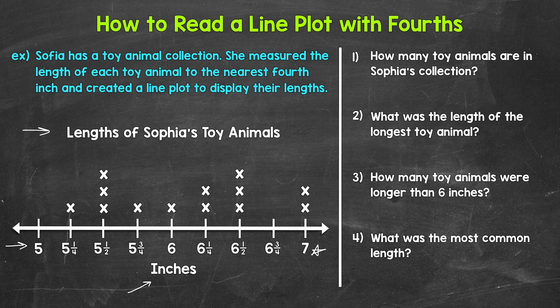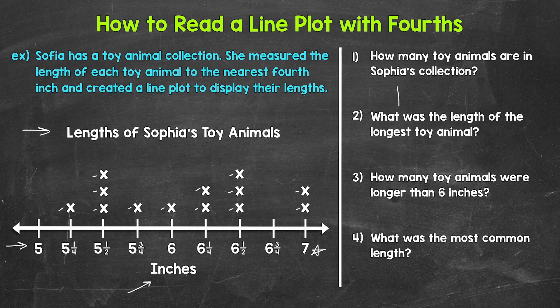Let's jump into our questions. Starting with number one: how many toy animals are in Sophia's collection? We need to count all of the total X's on the line plot, since each X represents a toy animal. Counting all of them: one, two, three, four, five, six, seven, eight, nine, ten, eleven, twelve, thirteen. So Sophia has 13 toy animals.